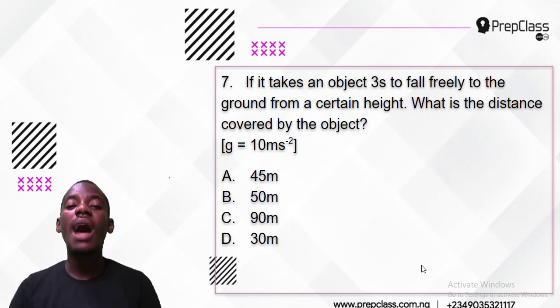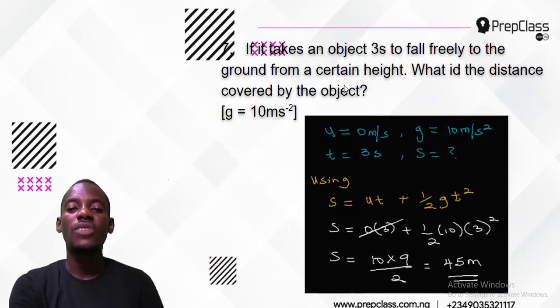We have to use the equations of motion. Let's break it down. The object is falling, so it starts from rest, meaning initial velocity U = 0. Acceleration due to gravity g = 10 m/s², and time t = 3 seconds. We need to find distance s.